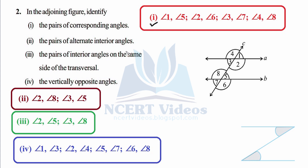The second part asks for pairs of alternate interior angles. Alternate means crossing, and they are interior angles. The pairs are three and five, and two and eight — giving us two pairs.